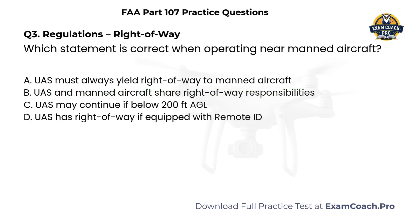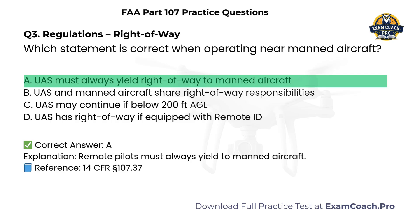Regulations. Right-of-way. Which statement is correct when operating near manned aircraft? A. UAS must always yield right-of-way to manned aircraft. B. UAS and manned aircraft share right-of-way responsibilities. C. UAS may continue if below 200 feet AGL. D. UAS has right-of-way if equipped with Remote ID. Correct answer: A. Remote pilots must always yield to manned aircraft.